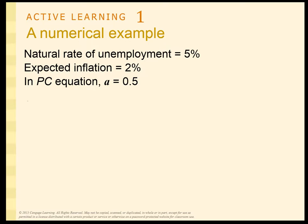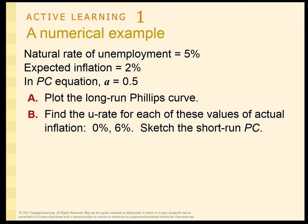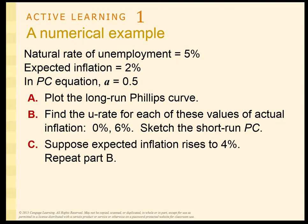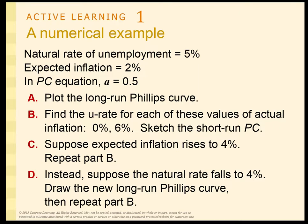Let's do an example. The natural rate of unemployment is 5%, expected inflation is 2%, and alpha is 0.5. Plot the long-run Phillips curve, find the unemployment rate for each value of actual inflation, sketch the short-run Phillips curve, then repeat when expected inflation rises to 4%. Finally, if the natural rate of unemployment falls to 4%, draw a new long-run Phillips curve and the short-run Phillips curve. Why don't you hit pause, take a minute, and then come back.